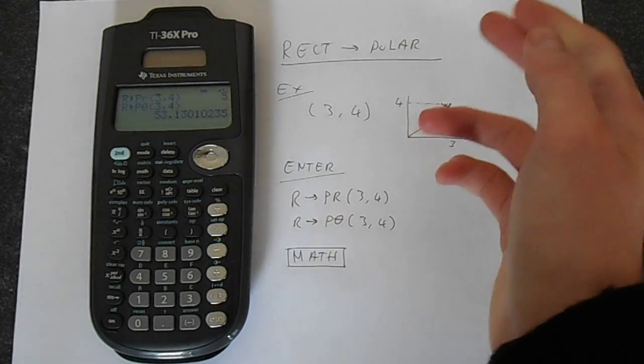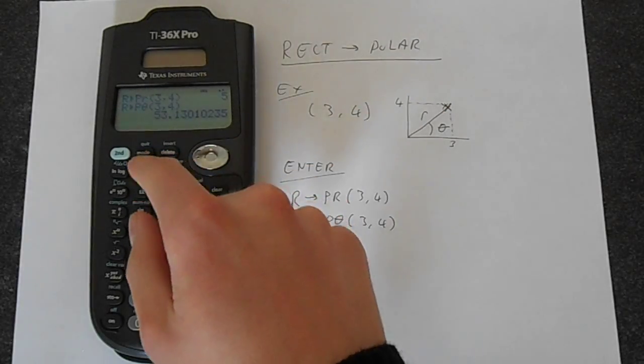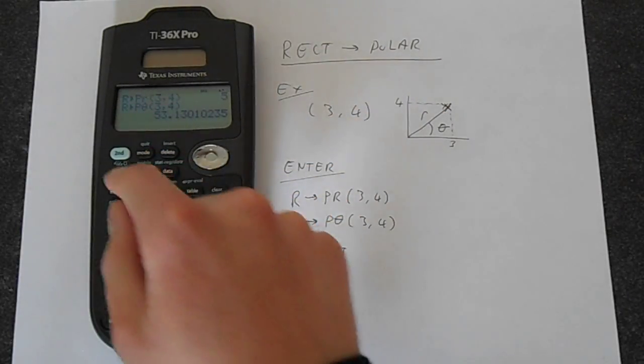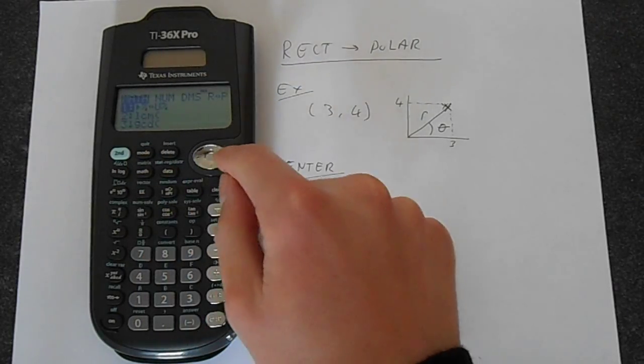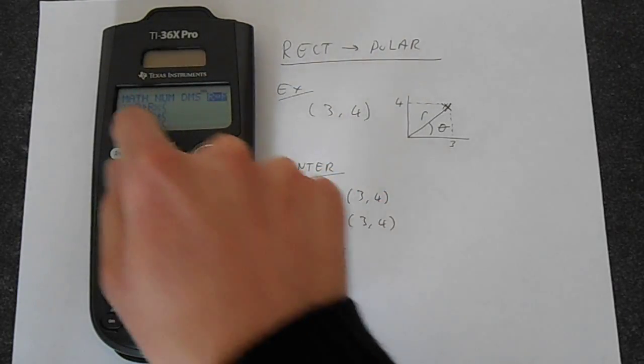And of course it works in reverse. So say you go to just clear this, so you go math and then go across and we can get polar to rectangular.